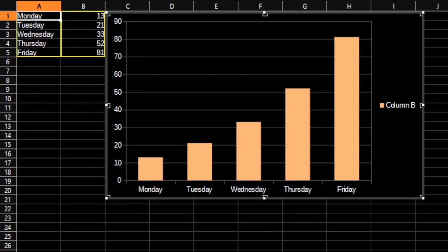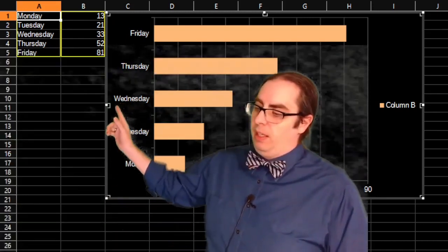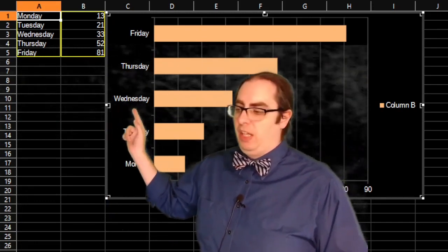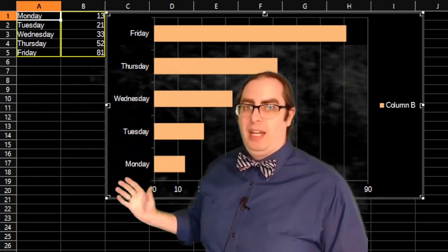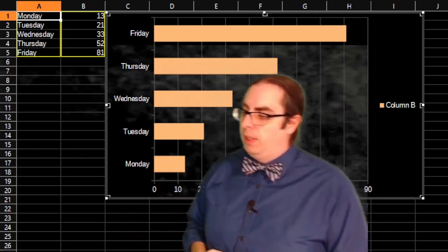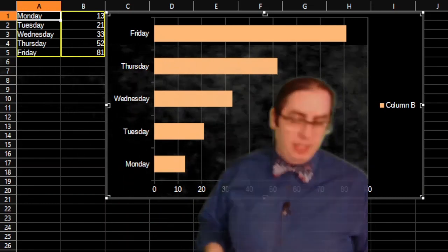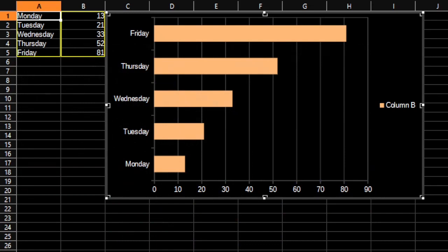Of course, we don't need our bar graph to come in columns. Very frequently, you'll see a bar graph where the bars come across in rows. Bar graphs set up like this, I find to be very useful when we have categories that are a little bit longer. It gives you more space over here to put the label of each category. You can make that a little bit wider compared to when you had it at the bottom.